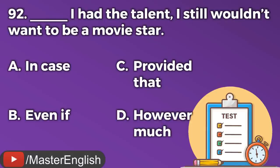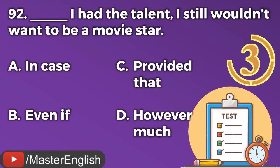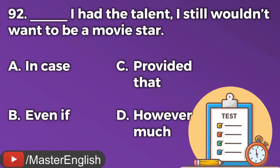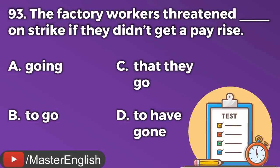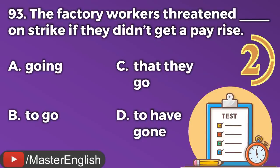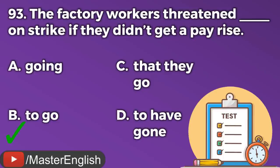Question number ninety-two. ___ I had the talent, I still wouldn't want to be a movie star. A: In case. B: Even if. C: Provided that. D: However much. The correct answer is B: Even if. Even if I had the talent, I still wouldn't want to be a movie star. Question number ninety-three. The factory workers threatened ___ on strike if they didn't get a pay raise. A: Going. B: To go. C: That they go. D: To have gone. The correct answer is B: To go.